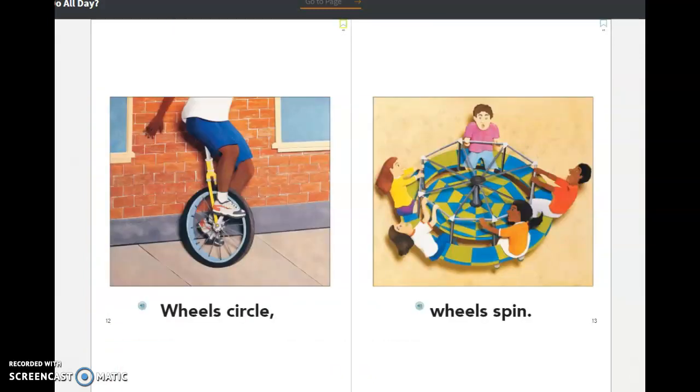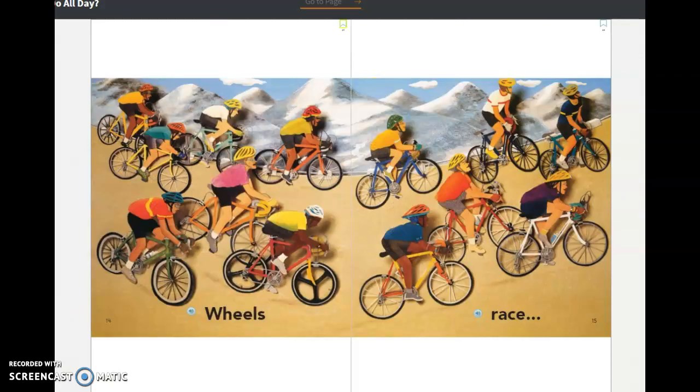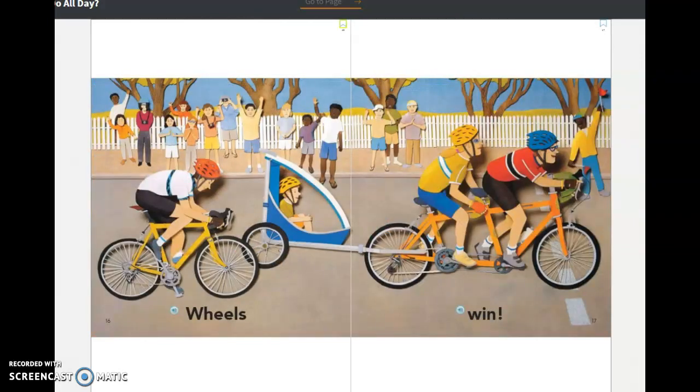Wheels circle. Wheels spin. So here's some fun ways to use some wheels on a unicycle or on a merry-go-round. Wheels race. Wheels win. Oh they're on a bike built for two and they won.